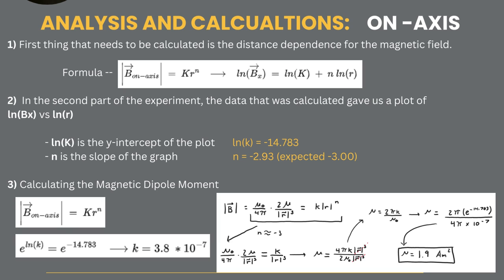The reason why the graph was in ln of Bx and ln of r is because we can rework this to where we can just isolate ln of k as a y-intercept and we can find n, which is actually the slope of the graph, which we got to be negative 2.93, so we can sum it around negative 3. This is important because when calculating the magnetic field dipole moment, we were actually able to cancel out a lot of things and just allow ourselves to get the magnetic field dipole moment.